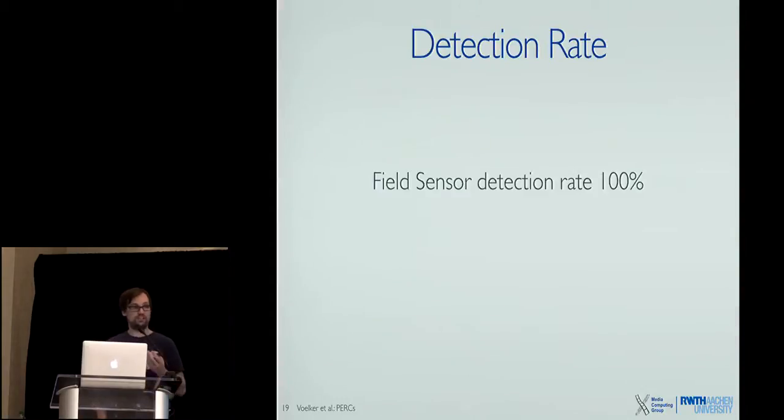So detection rate. The field sensor, the good news is it works all the time. It always told us that it was placed on the surface and it was removed from the surface. However, we have an overall detection rate of 98%. So we lose some trials where we couldn't detect the tangible. And this is due to the macro pattern.